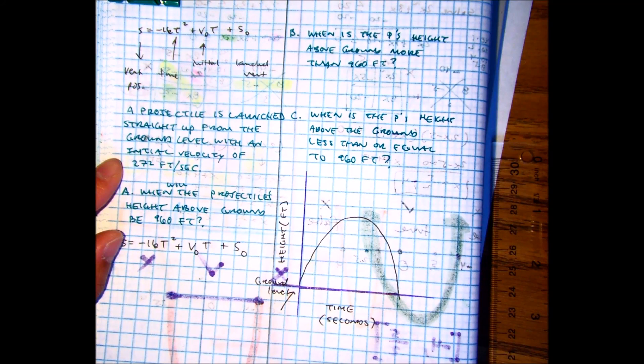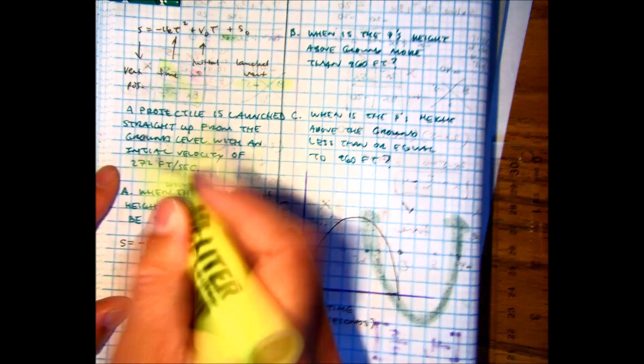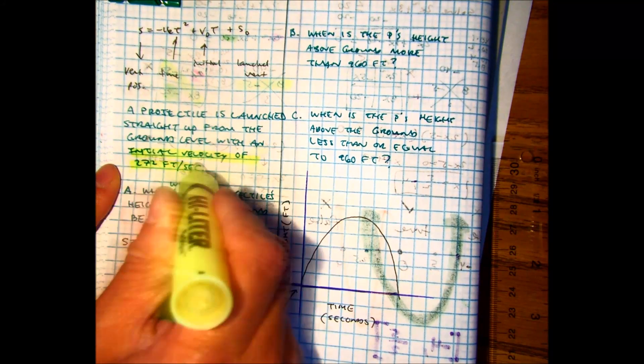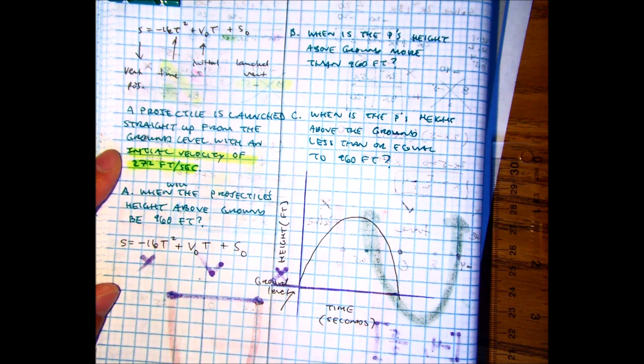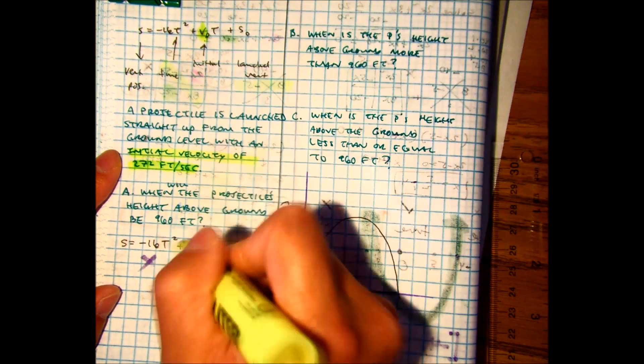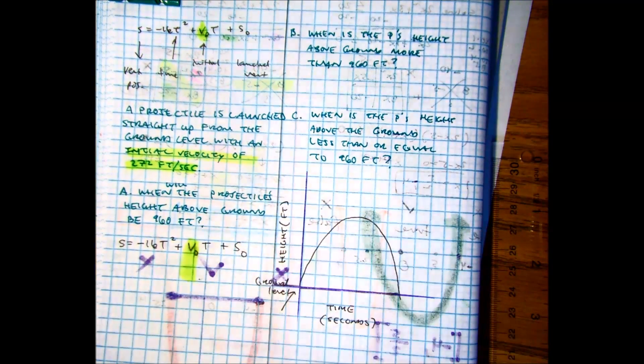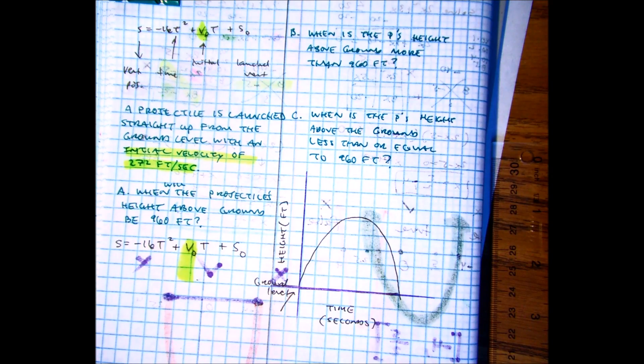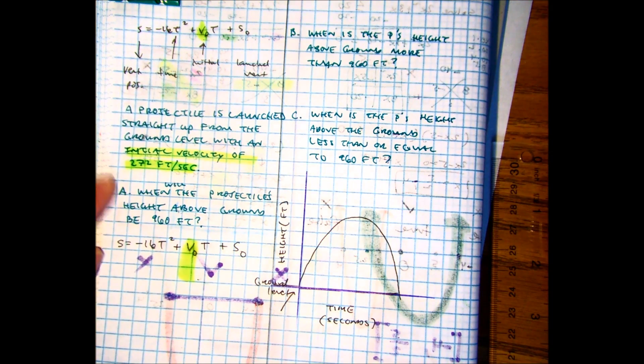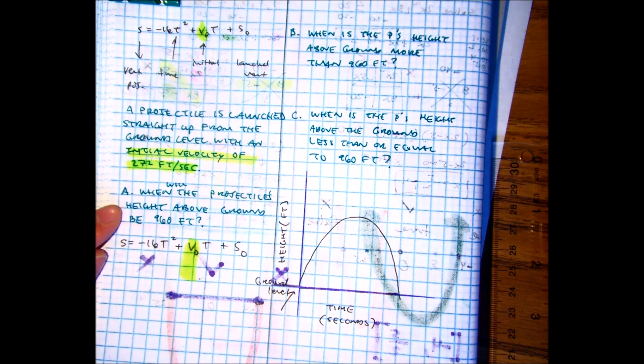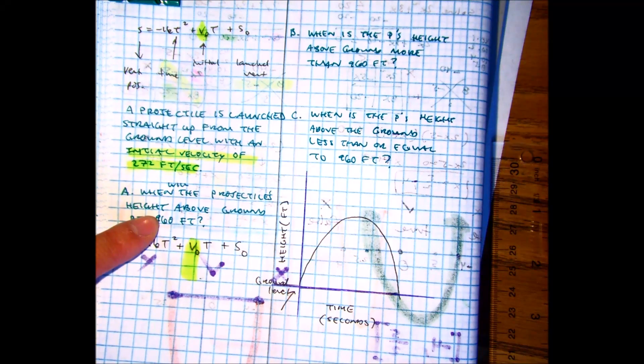With initial velocity of 272 feet per second. My initial is V zero. Then I ask you,